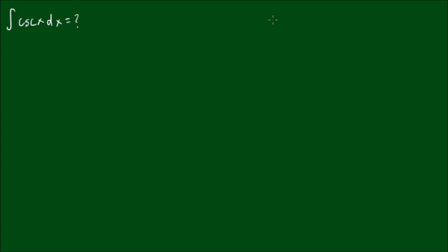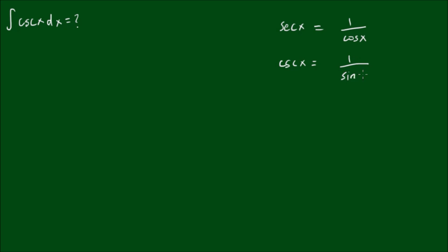Cosecant is closely related to its sister function, secant. With secant being 1 over the cosine of x, cosecant is, of course, the reciprocal of the sine of x, or 1 over sine of x.